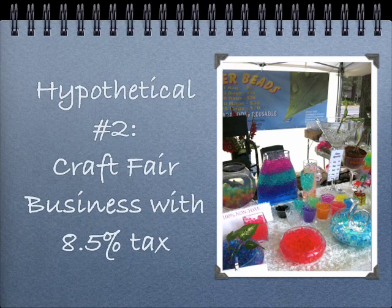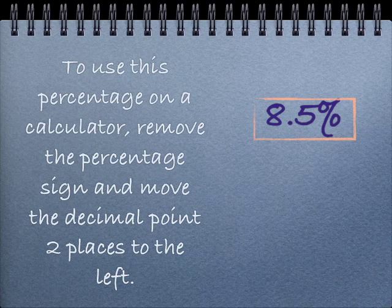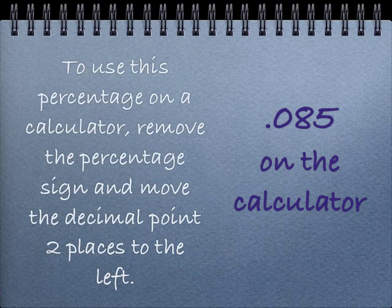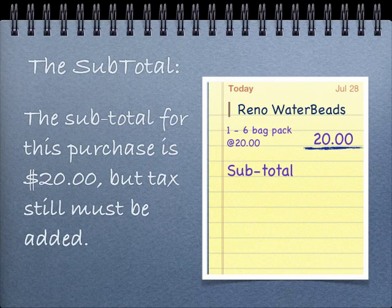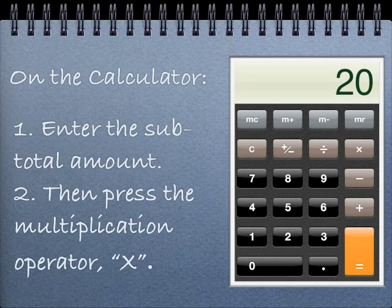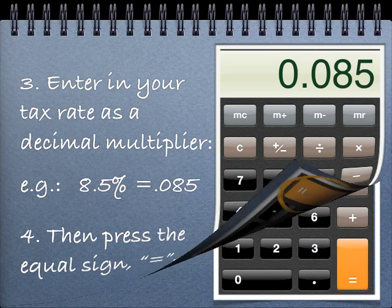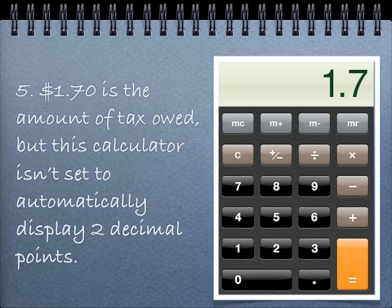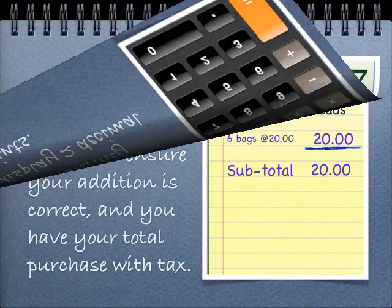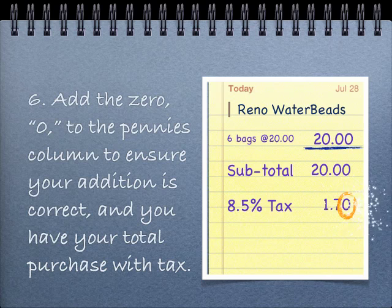Hypothetical number two: a craft fair business with an 8.5% tax rate. Again, to use this percentage on a calculator, remove the percentage sign, then move the decimal point two places to the left, giving you a .085 multiplier on the calculator. The subtotal for this purchase is $20, but tax still must be added. Enter the subtotal amount, then press the multiplication operator, x. Enter your tax rate as a decimal multiplier — in this case .085 — then press the equal sign. $1.70 is the amount of tax owed, but this calculator isn't set to automatically display two decimal points, so you need to add a zero to the pennies column to ensure your addition is correct. Your total purchase with tax is $21.70.